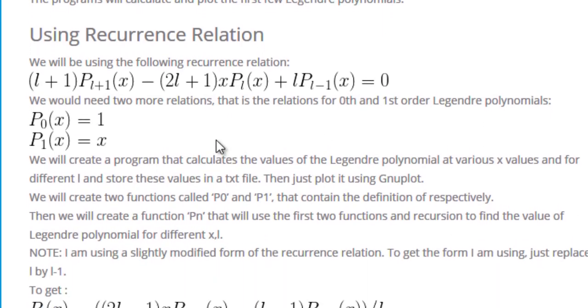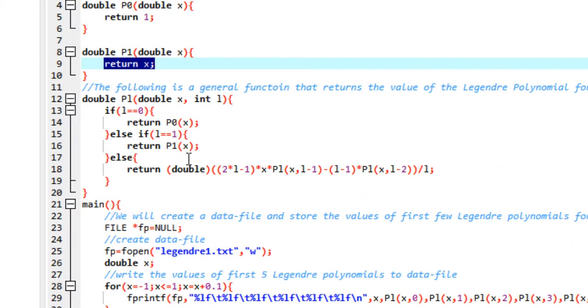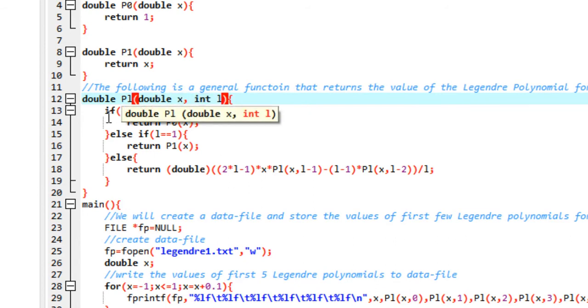The next part of the program will utilize the recurrence relation and will also make use of recursive function. We create a function called pl. It takes two parameters: x and l. X is of type double and l is of type integer, and the function is itself of type double. If l equals 0, then you return P0 of x, which you have already defined. Similarly, if l is equal to 1, then you return P1 of x.